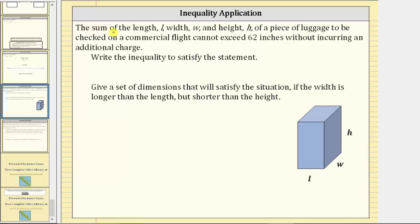Sum means addition, and the sum of these three lengths cannot exceed 62 inches, which means it can equal 62 inches or less. The inequality for this statement is L plus W plus H, less than or equal to 62.